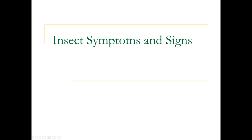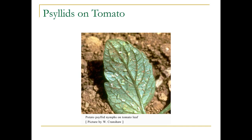For the most part, you're going to see insect symptoms and signs, but very often you won't see the insect itself. Or some of the signs would be the actual insects. This is psyllids on tomato. It has piercing, sucking mouthparts, so if you were to look at the top portion of the leaf, you would see stippling.